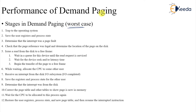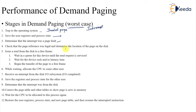These points are now in much more detail. We will get a trap from the operating system because we are trying to access an invalid page. Invalid page access will cause a trap from the operating system. Save the user registers and the process state. A trap is essentially an interrupt. Whatever process you are executing, save that status and determine that the interrupt was a page fault.